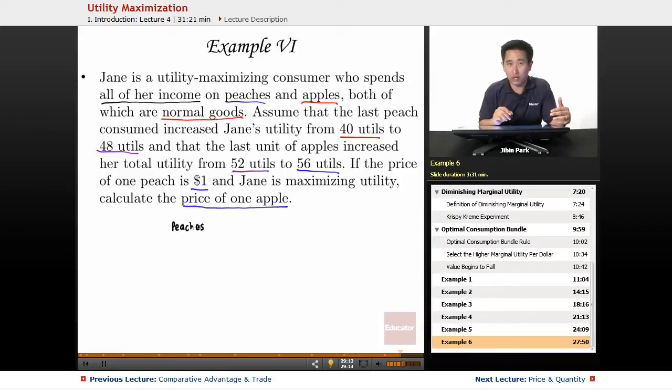So for peaches, 48 minus 40 will equal 8. The marginal utility of peaches equals 8.